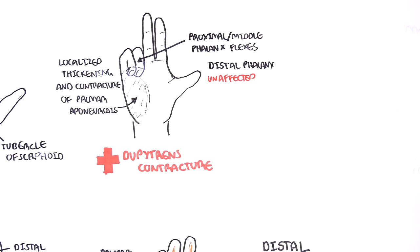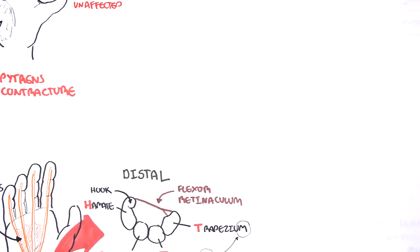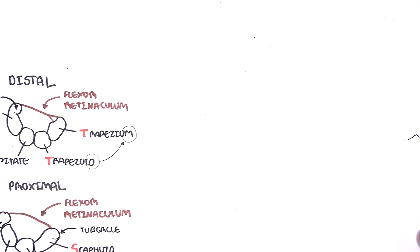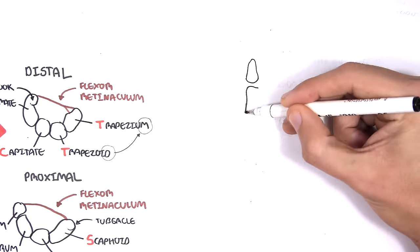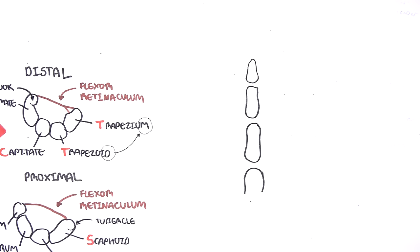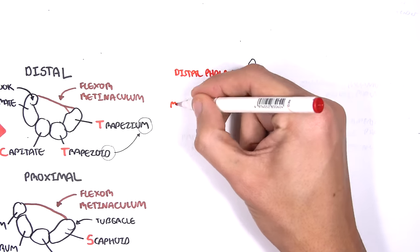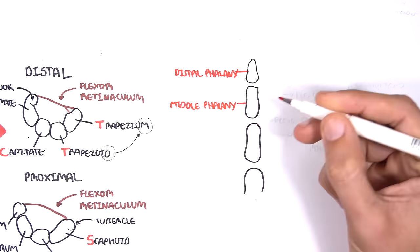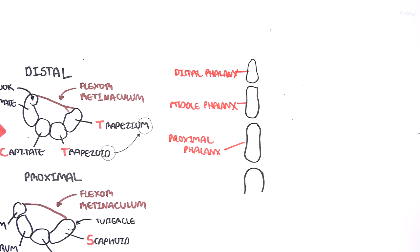Let's look in more detail at the anatomy of the finger — the phalanges. We are mainly looking at the middle, index, ring or little finger, but not the thumb because the thumb does not have a middle phalanx. These other fingers consist of the distal phalanx, the middle phalanx, and the proximal phalanx, and then you have your metacarpal.